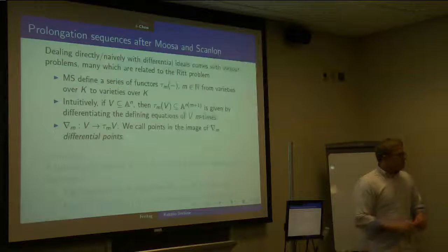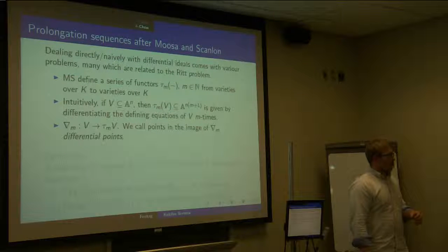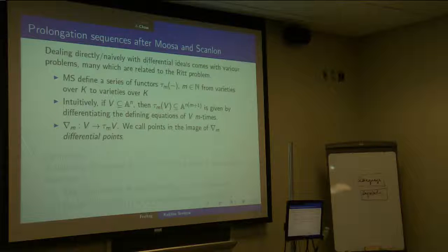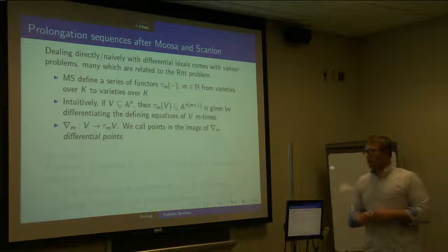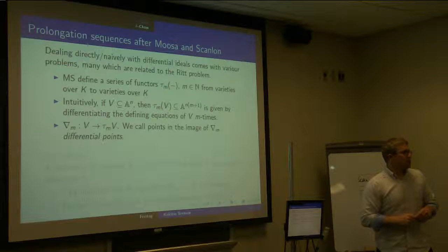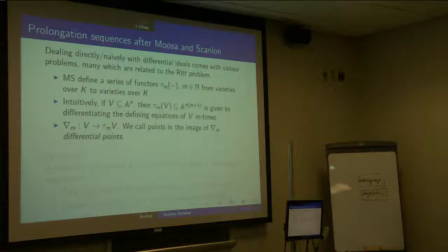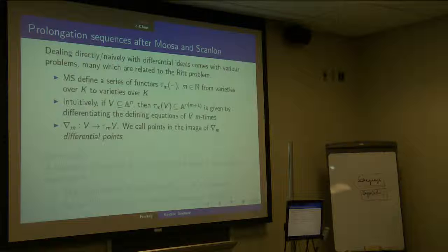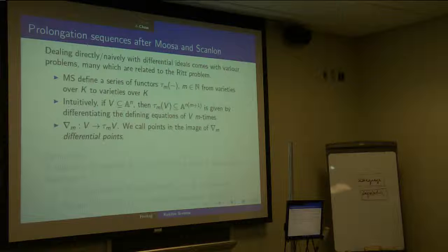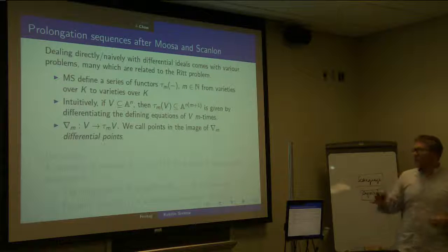If you do tau_1 and have singular points, the variety can split algebraically. If you restrict to the Zariski closure of the image of nabla, that will be irreducible. You can characterize it easily as the unique component. The concern is whether the equations can be calculated — it turns out to not be too hard, essentially the point of work various people have done, by intersecting the prime differential ideal.